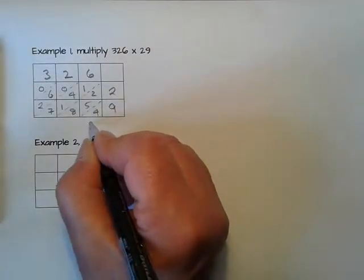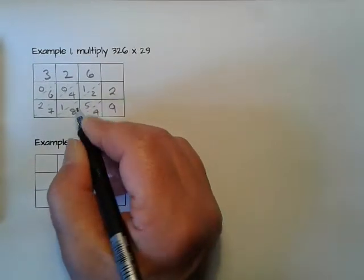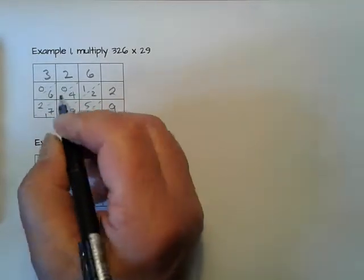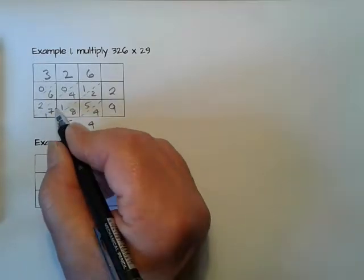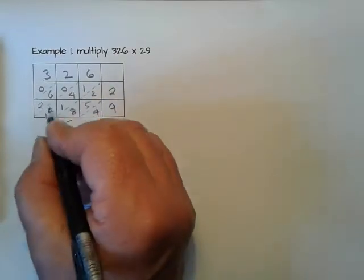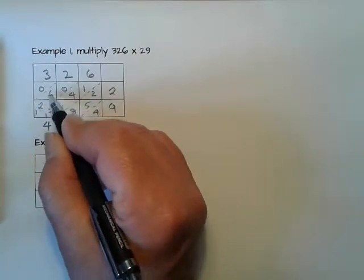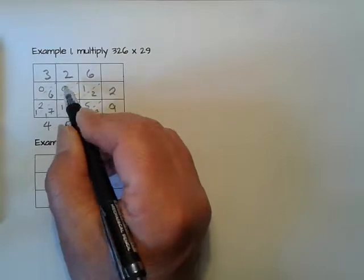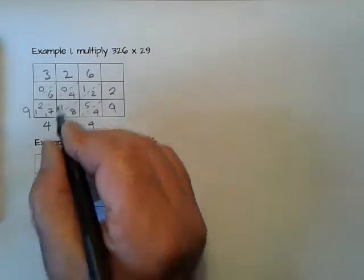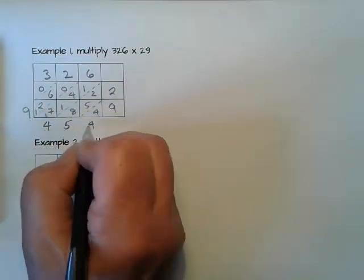That gives me 4. 2 add 5 is 7, add 8 is 15. Put the 5 there, carry the 1. That's 9, and 4 is 13, plus 1 is 14. Put the 4 there, carry 1. 3 and 6 is 9, and 0 is 9. There's nothing to carry. So the answer: 326 multiplied by 29 is 9454.